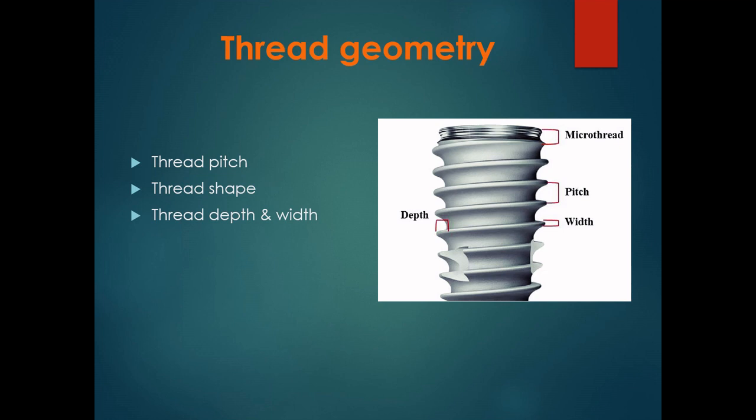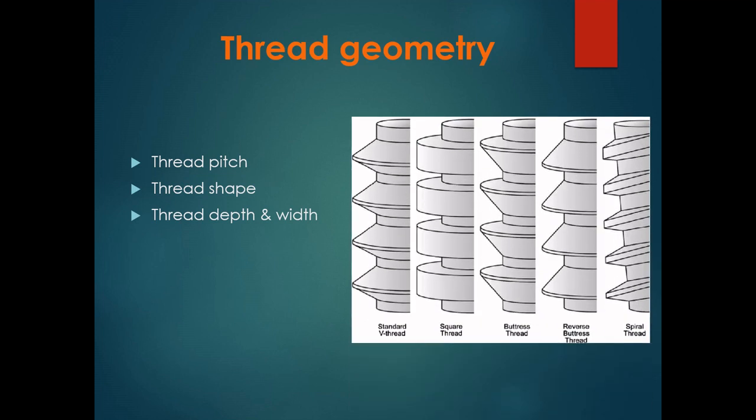Coming to thread shape: the thread shape influences the type of force transferred to the surrounding bone. There are different types of thread shapes — the square, V-shape, buttress, reverse buttress, and spiral. Among these, the shear force in a V-thread and a reverse buttress thread is 10 times greater than the shear force on a square thread. So among all thread shapes, the square one provides the best primary stability.